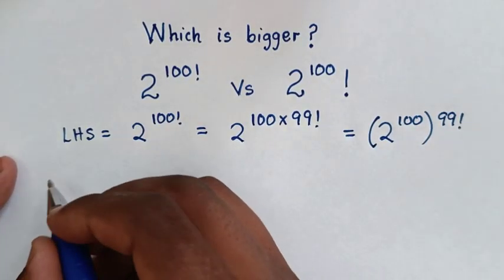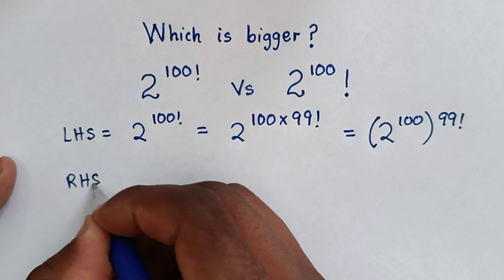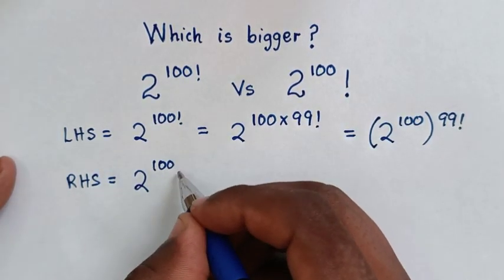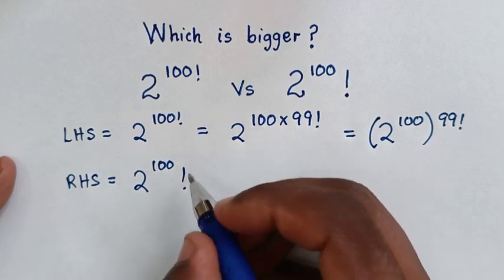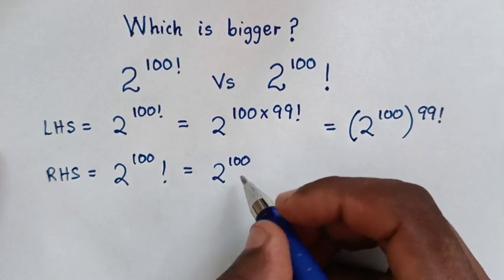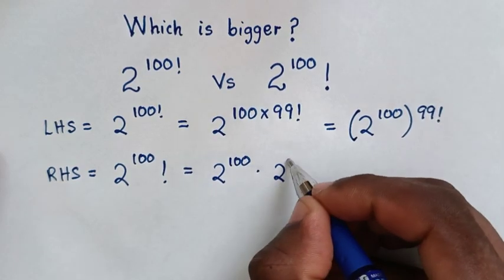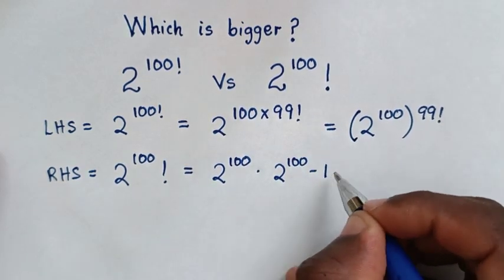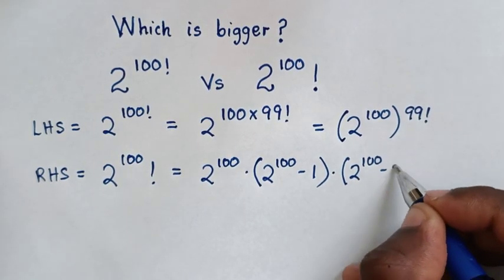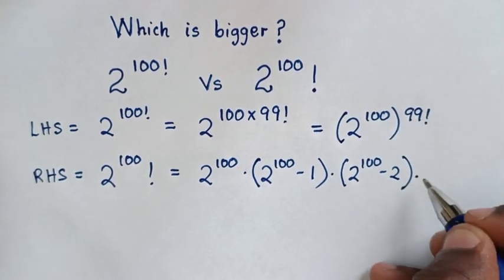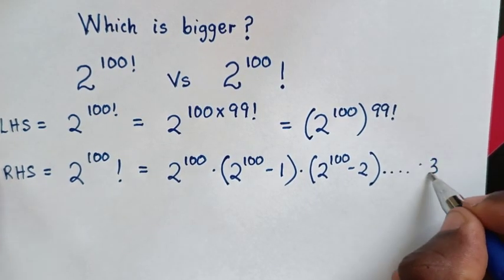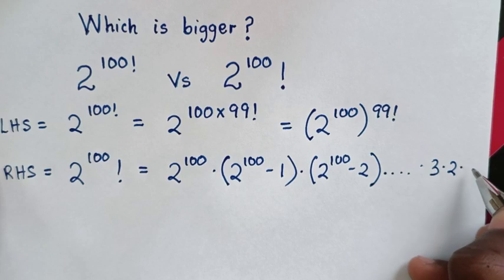From the right-hand side, 2 to the power of 100, all of this factorial, is equal to 2 to the power of 100, times 2 to the power of 100 minus 1, times 2 to the power of 100 minus 2, times 2 to the power of 100 minus 3, up to times 3, times 2, times 1.